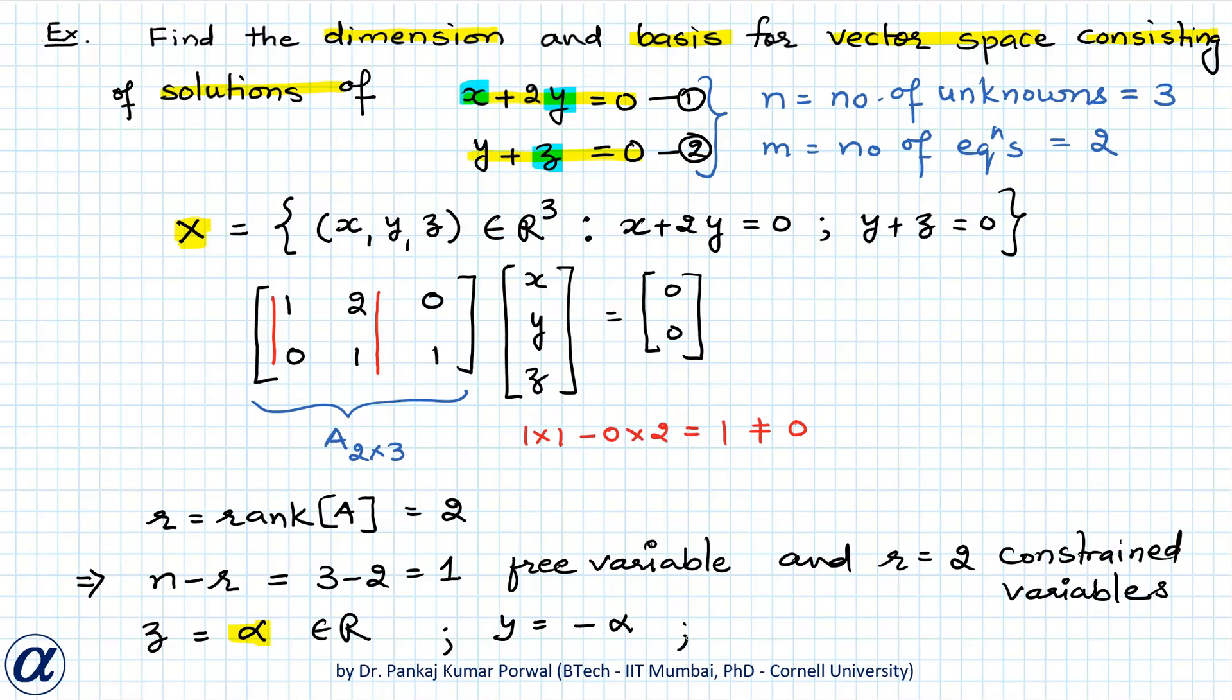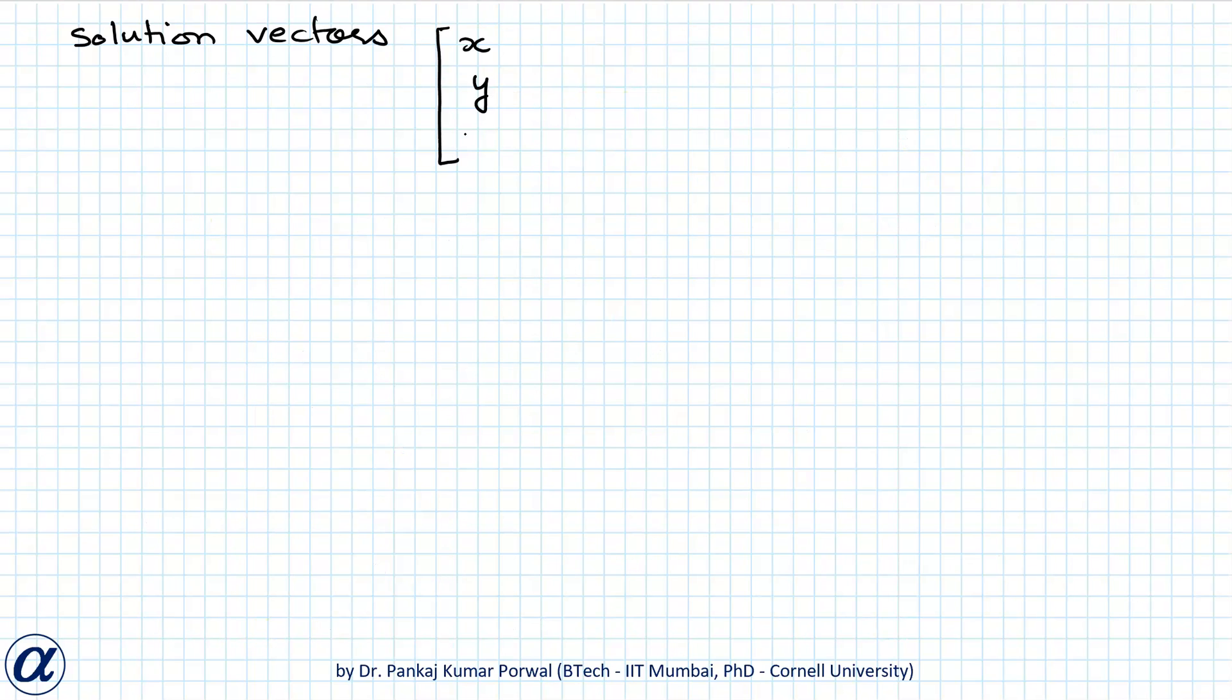then I get y equals minus alpha. And if I substitute y equals minus alpha in first equation, then I get x equals 2 alpha. So my solution vectors will consist of x component is 2 alpha, y component is minus alpha, and z component is alpha. And if I take alpha common from this, I can write this as alpha times [2; -1; 1].